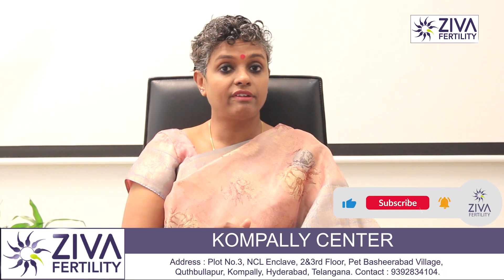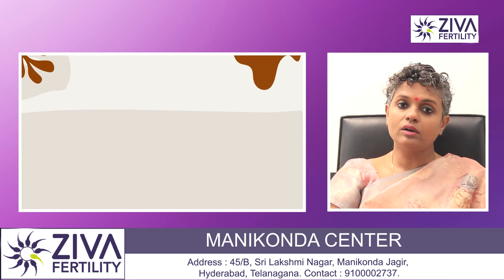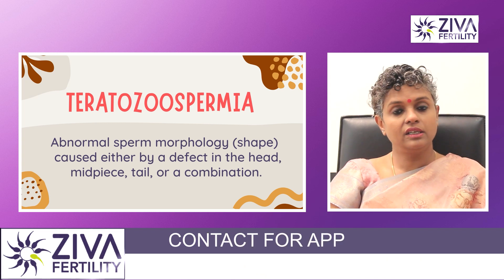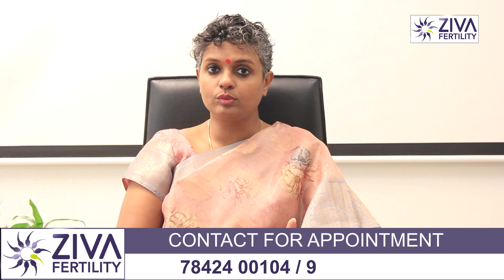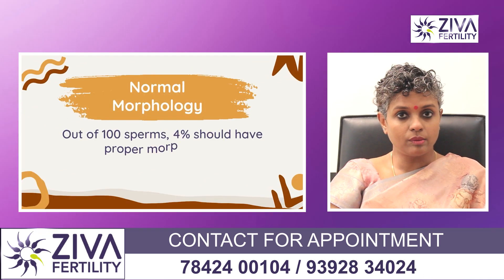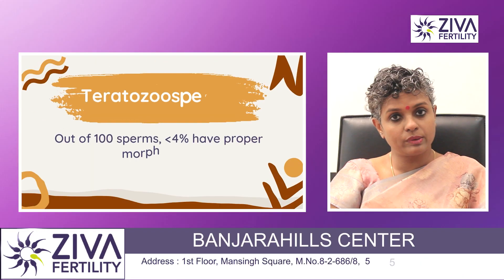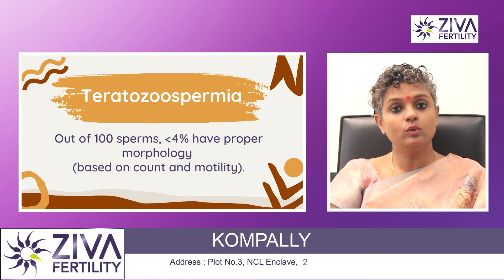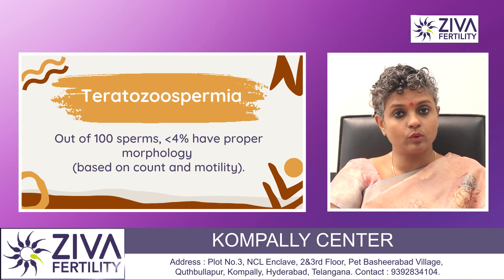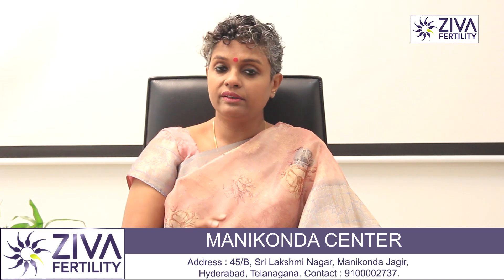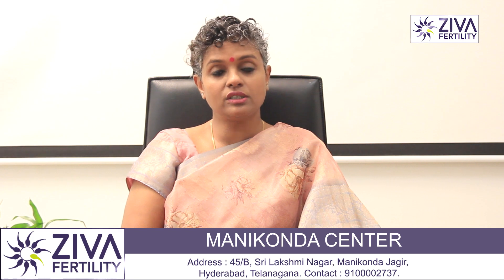Morphology is a very critical factor in determining whether sperms in a sample have fertilization capacity. When sperms are not of proper morphological competence, the report is given as Teratozoospermia — the indication that morphology is not what it should be. In a sample, we study 100 sperms and at least four should have proper morphology. Such a sample is considered normal based on count and motility. If it is below 4%, it is called a Teratozoospermia sample. If you have been given this report and want to understand more about how to evaluate morphology, where the defect is, and how it is affecting your fertility potential, please feel free to contact us.